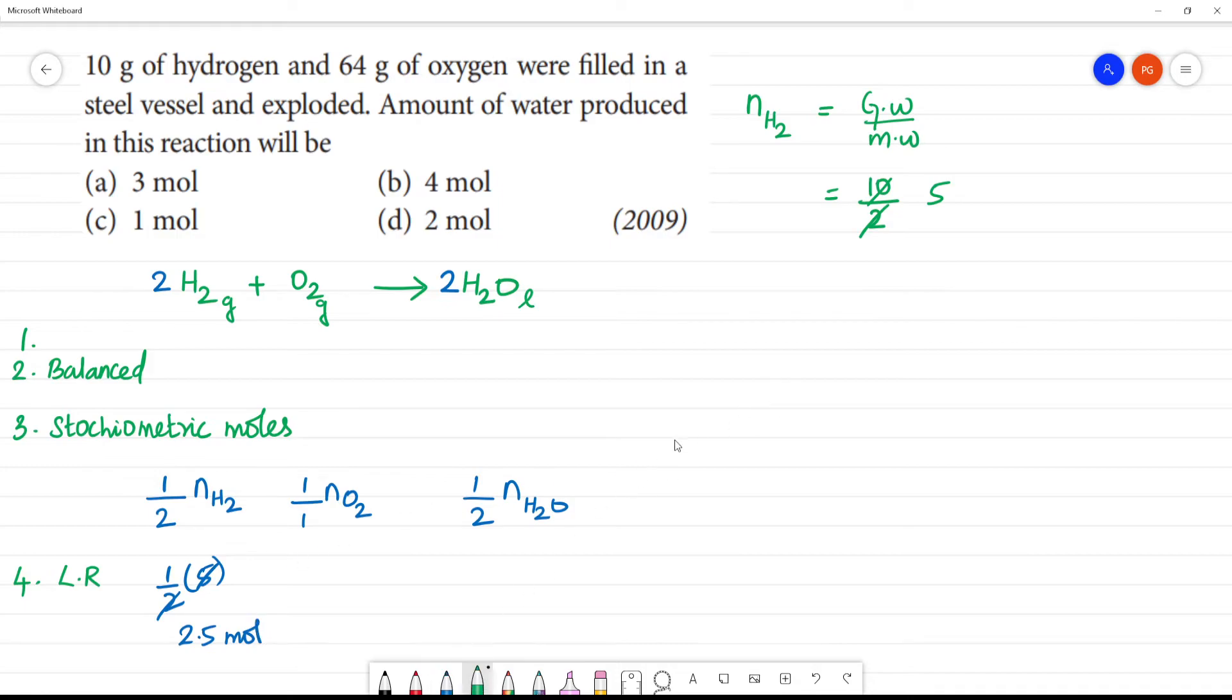Clear. Next, number of moles of oxygen O2 that is equal to given weight 64. Oxygen is 16, into 2 is 32, so this is 2 times. So this is 2 mole.